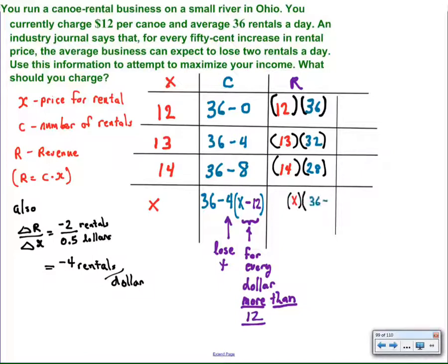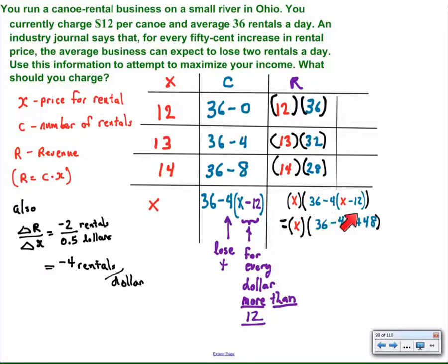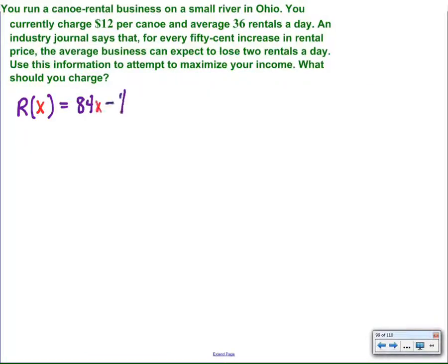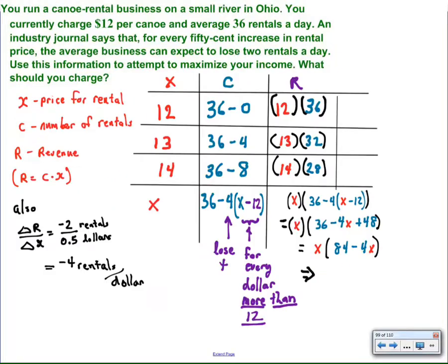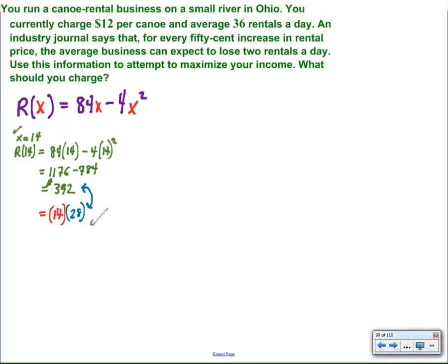We take the price times the number of rentals — that's the relationship connecting price to revenue. All we have to do is a little bit of algebra: first I distribute the negative four, watching for that negative 12 turning to positive 48, then collect like terms and distribute the x to get my revenue function. To verify, I substitute x equals 14 — since I calculated revenue for that already — and get $392 in revenue. I check that against 14 times 28 from the table, and sure enough, that was the right value.